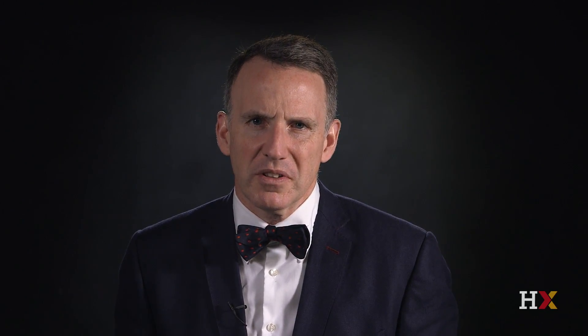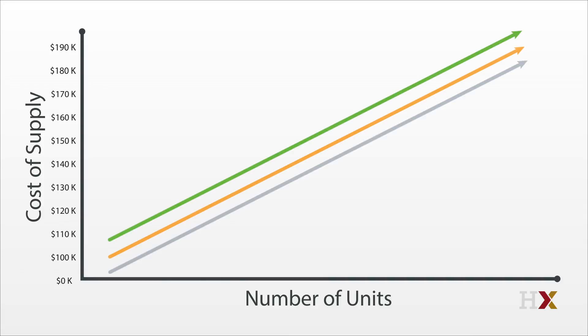We'll spend a bunch of time on the reasons why supply is so much easier in some places than in others. But for now, we'll just note that the supply costs will be a function of construction costs. If it costs more to build in Gotham, then the supply curve will shift upward. If it costs less, then the supply curve will shift down.